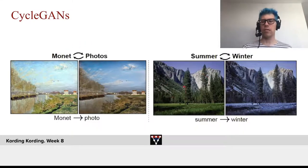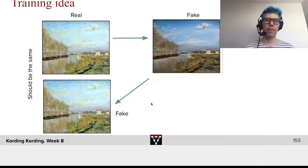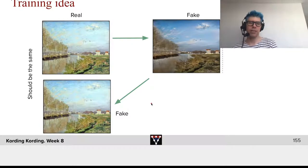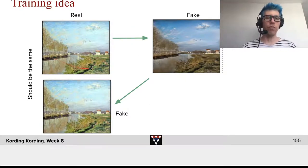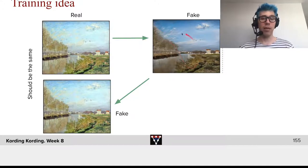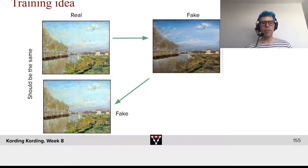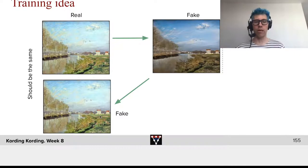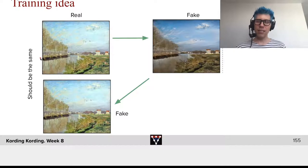Wouldn't it be cool if we could take photos in summer and produce photos in winter, or the other way around? Here's a training idea: you start with one image, which is a real Monet painting, produce a fake photo out of it, and then transfer it back. If the process works the right way — if you have that translation from Monet to real photograph — then these two images should be the same. This is super cool because it gives us extra training data.